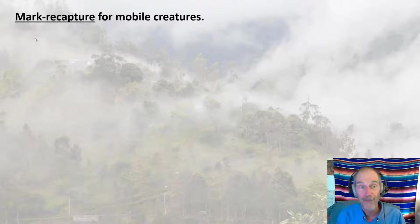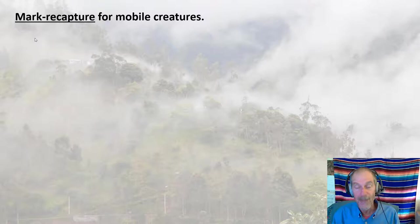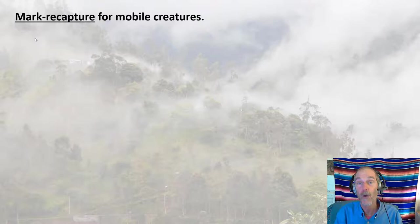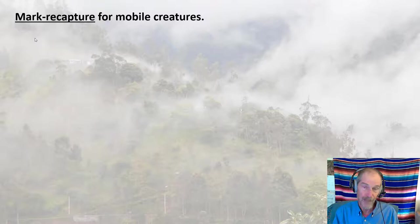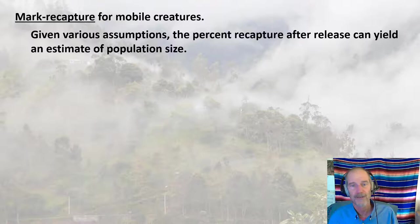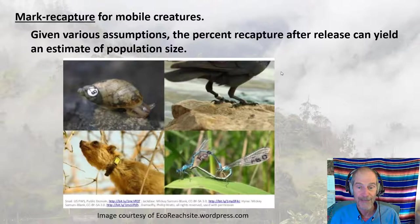Mark-recapture is a really cool sampling method for mobile creatures. You go out, gather a bunch of critters, mark them somehow, then release them. Under certain assumptions — complete mixing, no emigration, no immigration, no mortality — you let some time pass and then sample again. You count how many of your new sample carry a mark and how many don't, then do the math to develop a population estimate. The percent recapture after release can yield an estimate of population size.